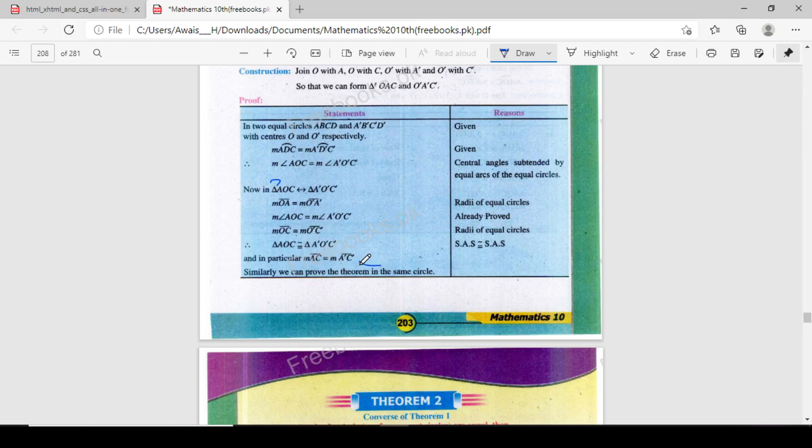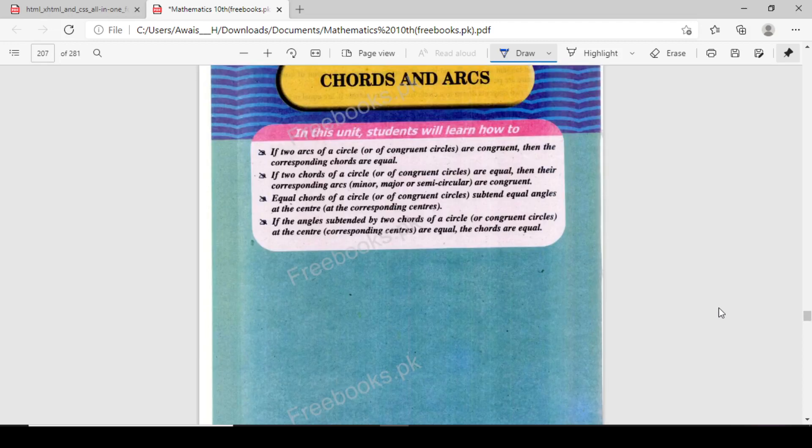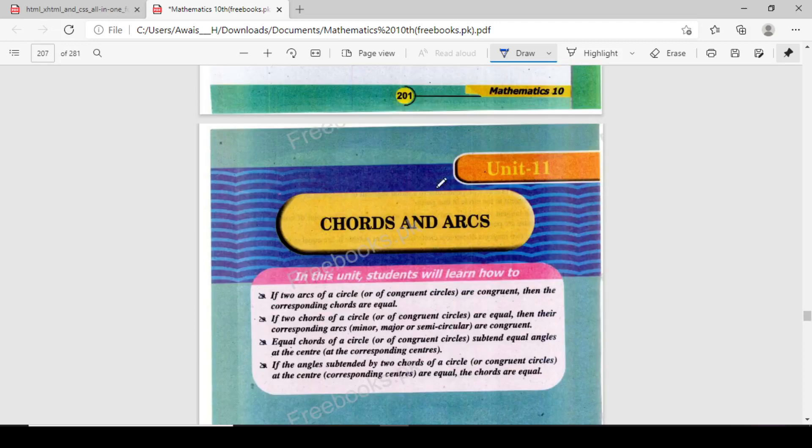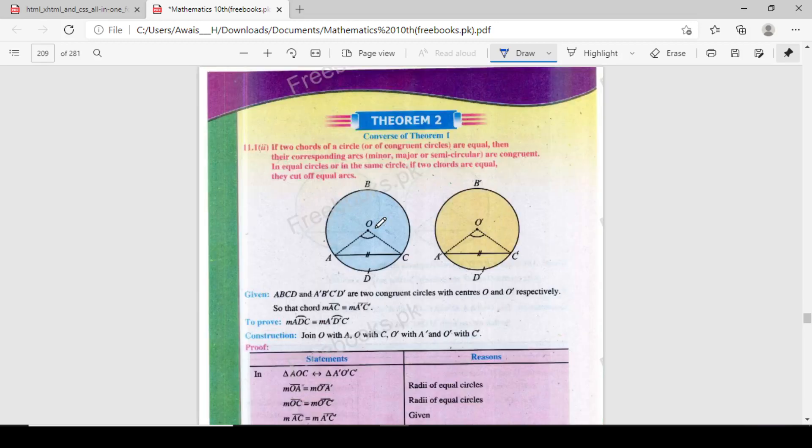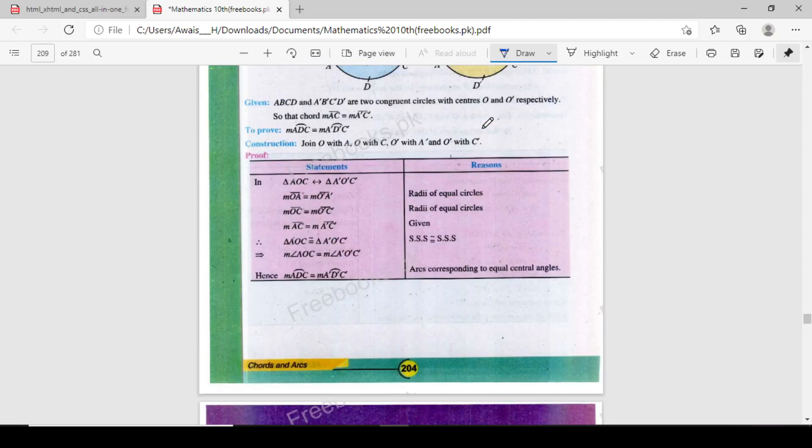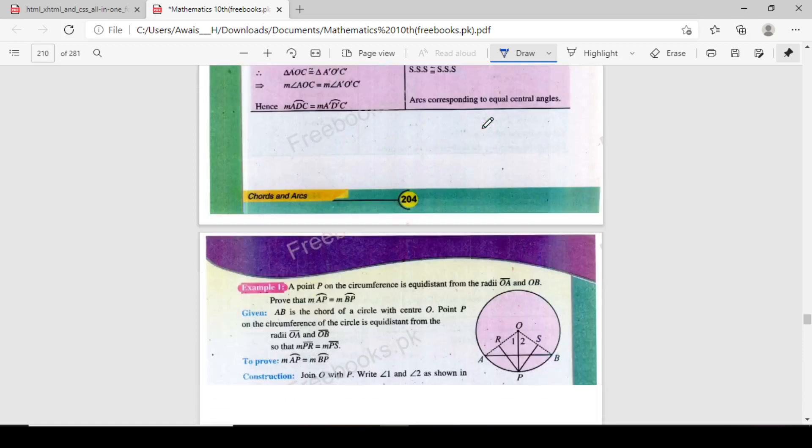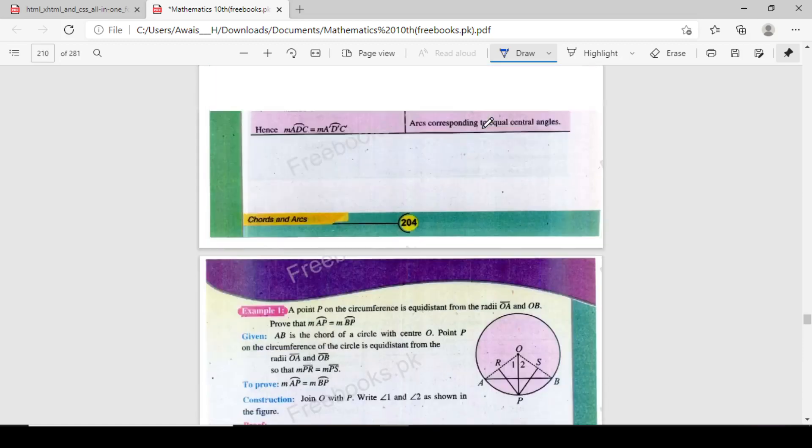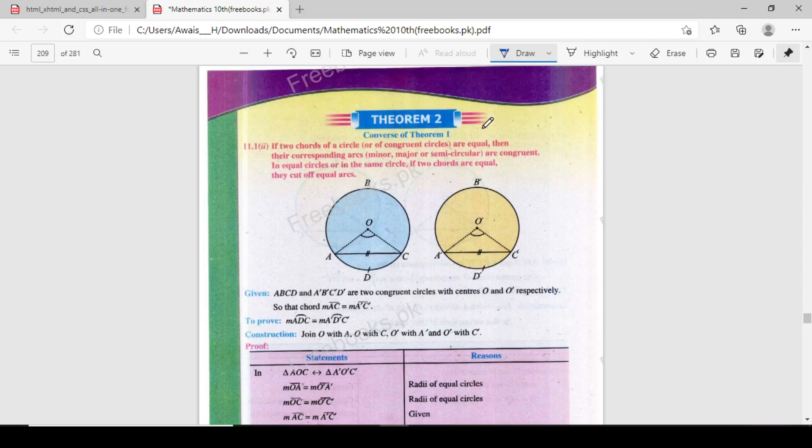Similarly we can prove the theorem in the same circle. Hopefully this theorem is very easy. The chapter of theorems, unit number 11, codes and arcs is very easy. This is theorem second is very easy. This second theorem is very easy, you can do easily. These theorems are very easy but depend on your thinking, how can you observe these theorems.